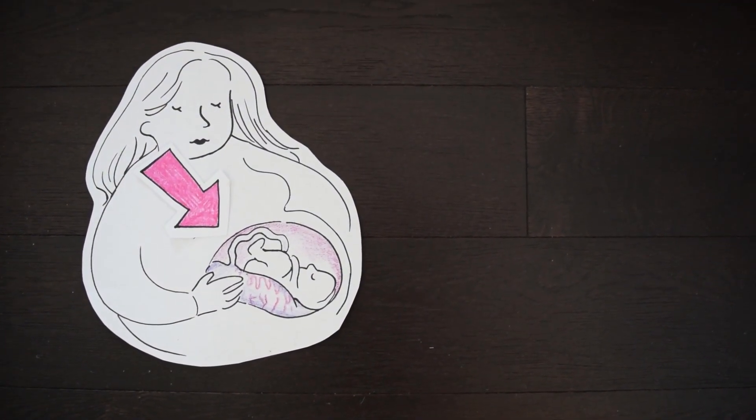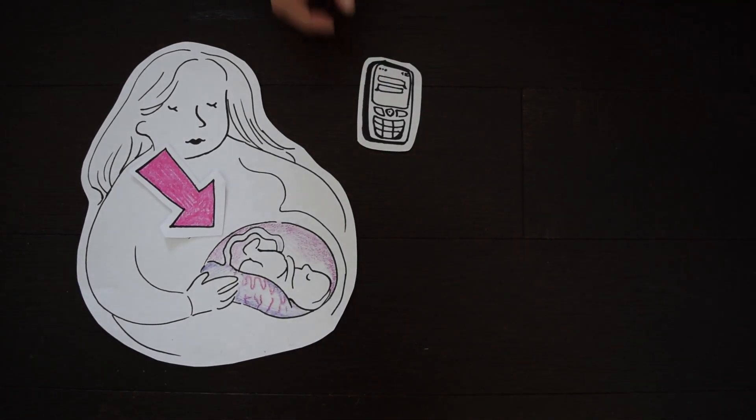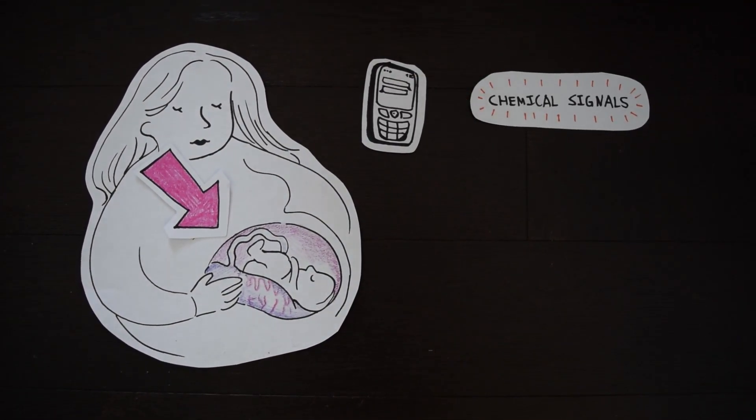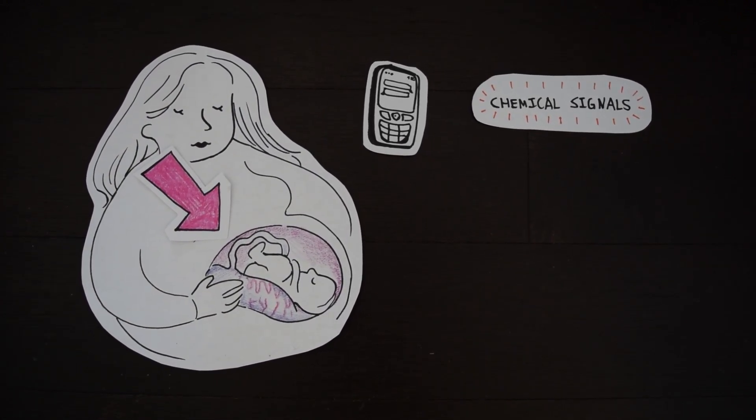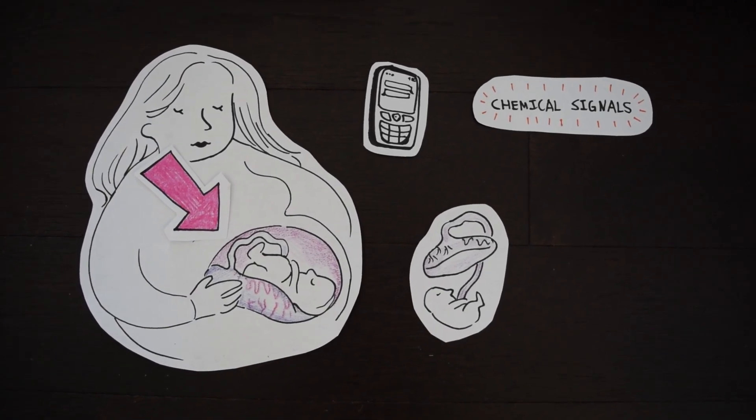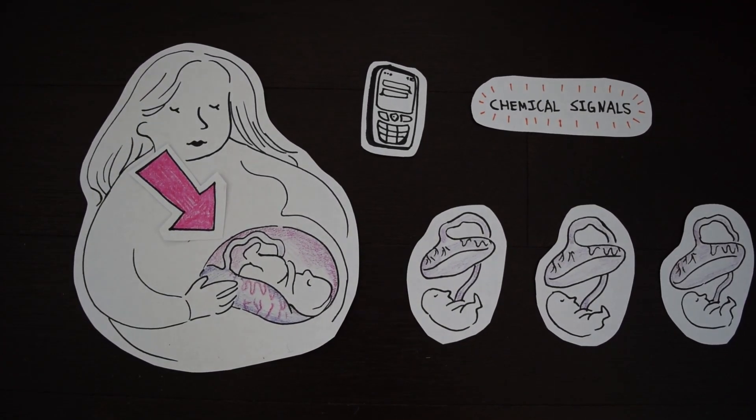The placenta acts like a telephone. As a baby grows inside of a mother's body, different chemical signals are exchanged through the placenta. This communication helps the baby grow. And what is particularly amazing is that a new placenta forms during each pregnancy.